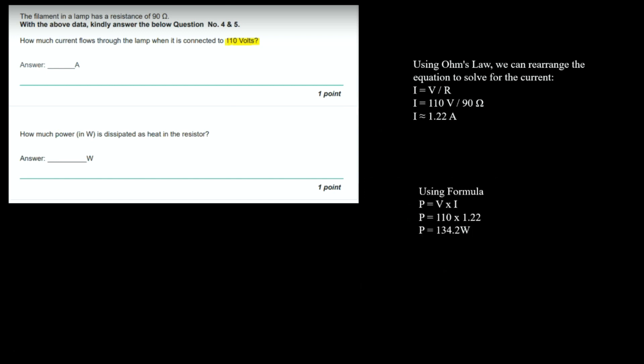Moving on: How much power in watt is dissipated as heat in the resistor? Using the formula P = V × I: P = 110 × 1.22 (calculated in part one) = 134.2 watts. That will be the answer.